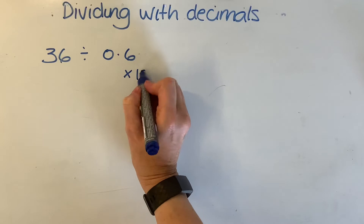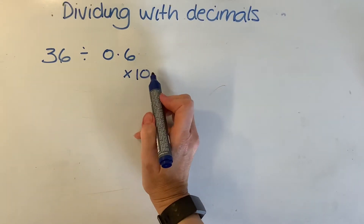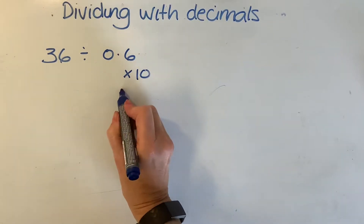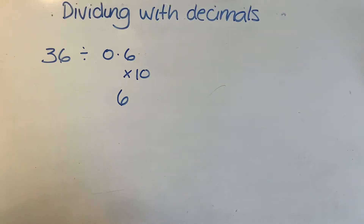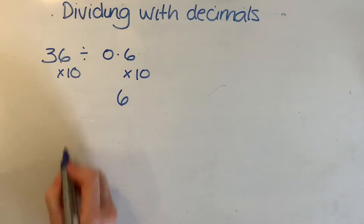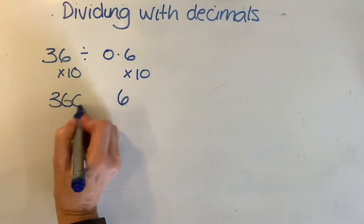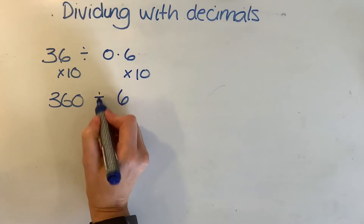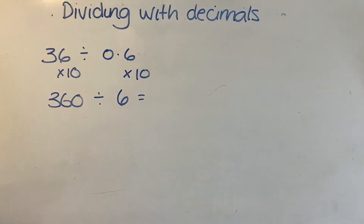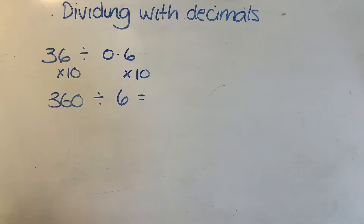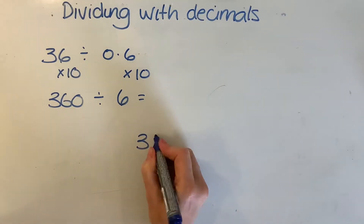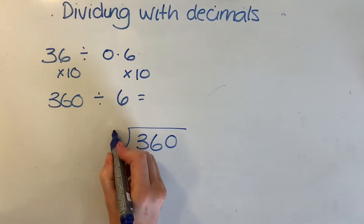If I do 0.6 times 10 I end up with 6, but if I do that to the second part of the question I've also got to do it to the first part of the question — I've got to times that by 10 as well. So 36 times 10 is 360. My sum is then going to be: what is 360 divided by 6? The answer to this will be exactly the same. So I'm going to do my bus stop method — I've got 360 divided by 6.